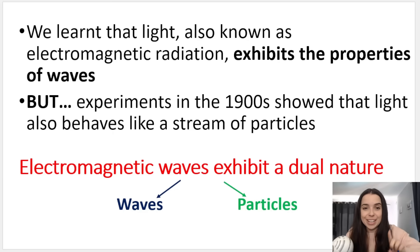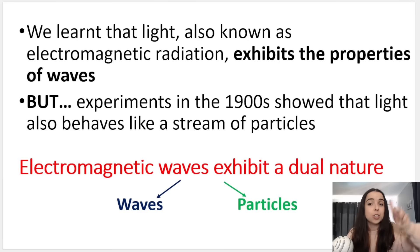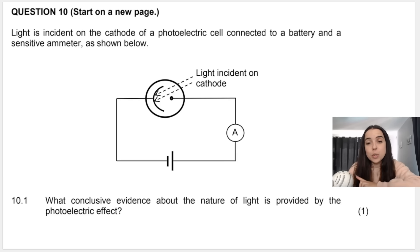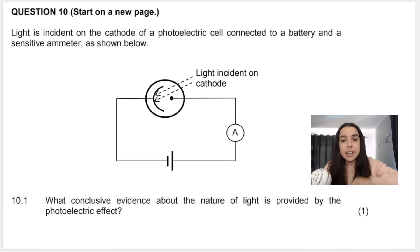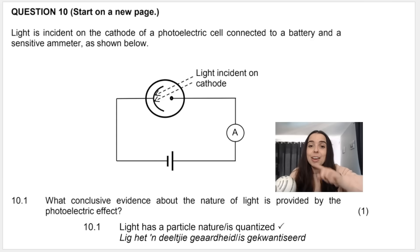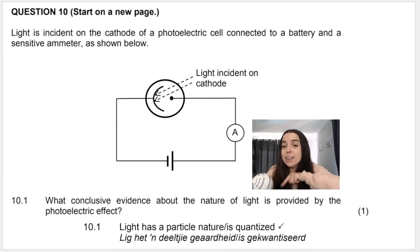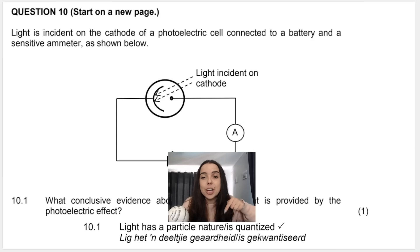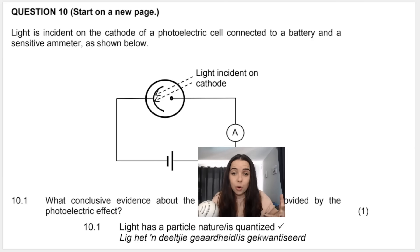That's why we said in grade 10 that electromagnetic waves or light exhibit a dual nature — it can act as a wave or it can act as a particle. It's the photoelectric effect that illustrates the particle nature of light. If you take a look at this question from a 2022 exam, they ask: what conclusive evidence about the nature of light is provided by the photoelectric effect? The answer is that light has a particle nature, or is quantized.